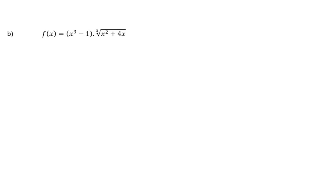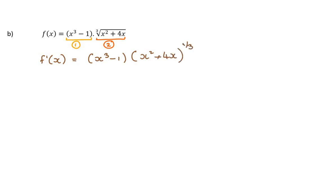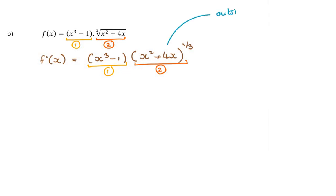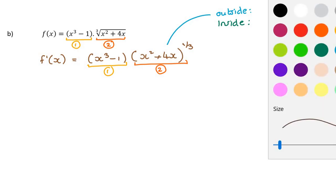On to question B. Again, this is definitely a product — here we have function number one and here we have function number two. The moment I see function number two has a root, I rewrite it with an exponent: x cubed minus one times x squared plus four x, all to the power of one third. Function number two is a power function — it has an outside function of something to the power of a third, and an inside function of x squared plus four x. So we'll have a chain rule within the product rule.